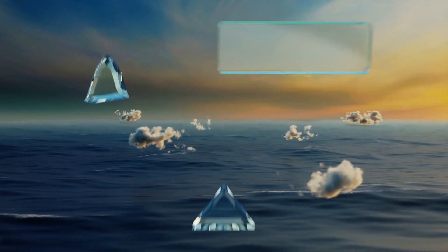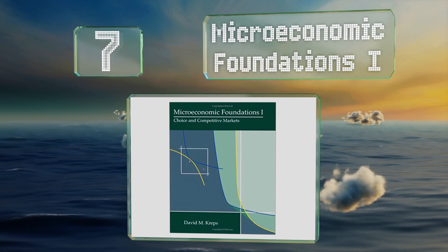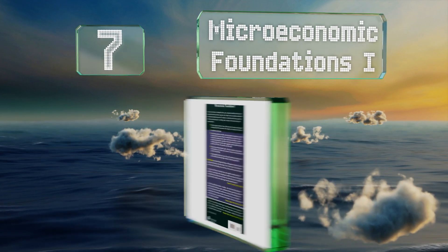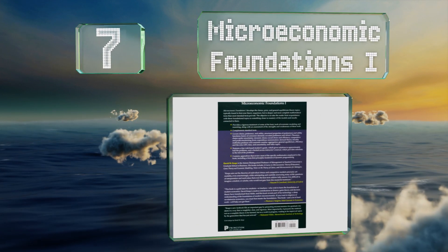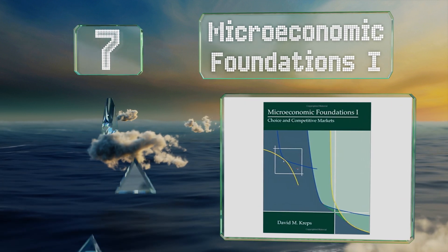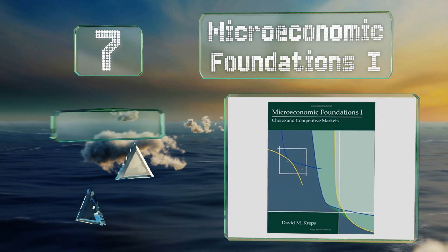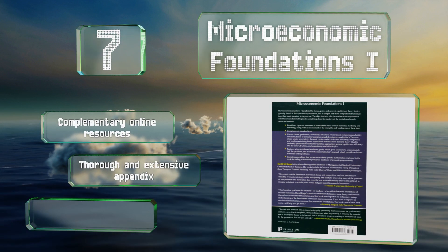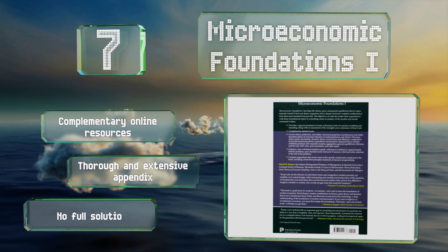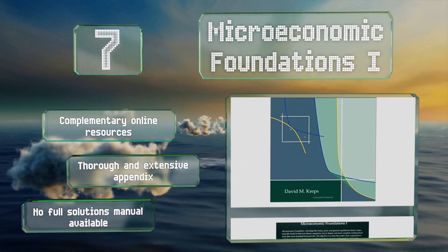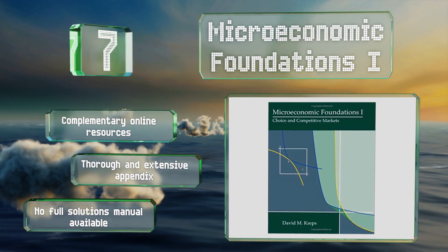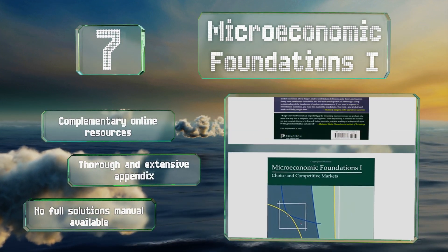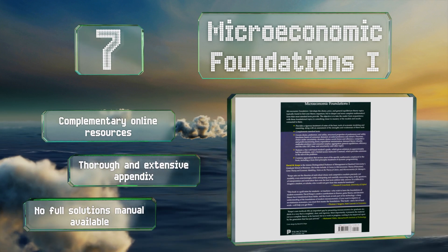At number seven, Microeconomic Foundations One is written in a style that encourages students to view each economic theory as a work in progress rather than a fact to be memorized. Sure to challenge and enlighten, this includes in-depth explanations of mathematical concepts. It features complementary online resources and a thorough and extensive appendix, but no full solutions manual is available.